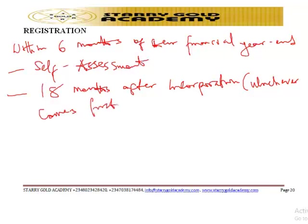A company may file an application for extension of filing tax returns for up to two months, at the discretion of the FIRS. The company must file the following documents with the tax authority for the purpose of obtaining the company's Tax Identification Number.